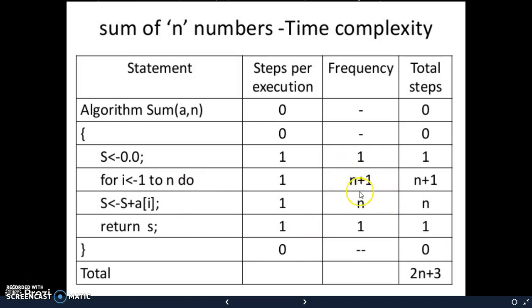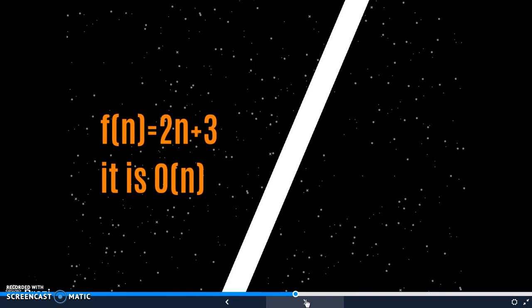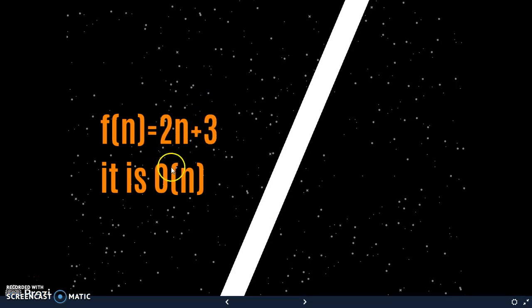And we find the total count which is 2n plus 3, which is nothing but a time function. Now for that particular program you have got a time function f of n equals 2n plus 3, which is usually denoted as order of n. Instead of this function, we are showing it as order of n, which is a classification process.